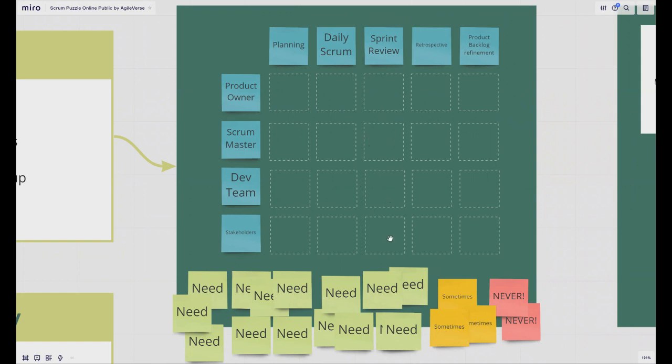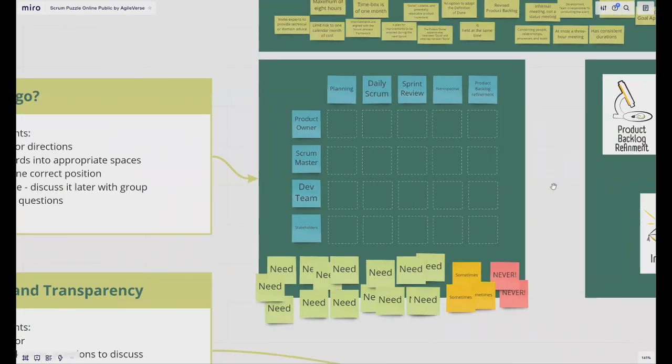For example, when you should be at this event as scrum master, for example sprint planning, you should put the green card. But if you don't know and it depends on some circumstances, it may be yellow. If you should avoid this event, it should be pink, never visit it. After completing this table with the group, you may discuss it and go to the next step.